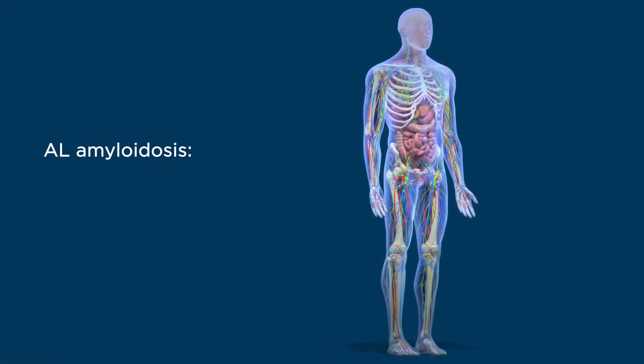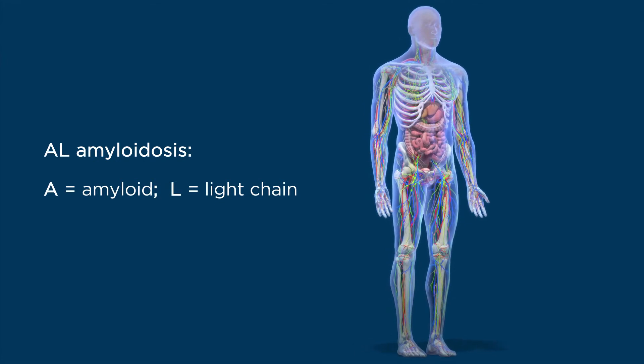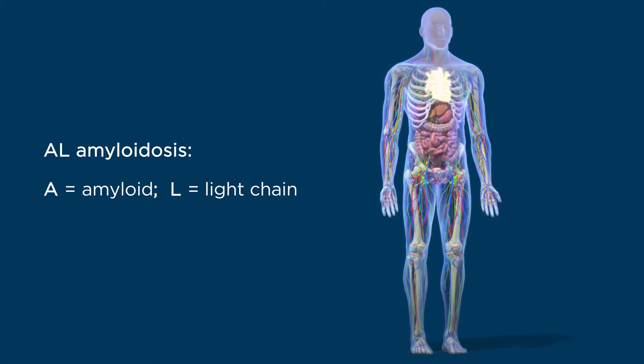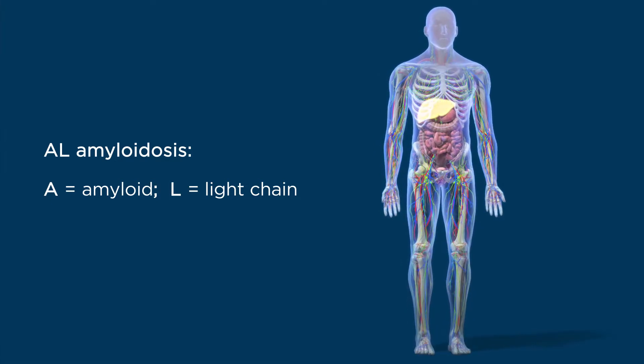AL amyloidosis is caused by the misfolding of light chain proteins which accumulate and deposit as amyloid in various tissues and organs throughout the body.